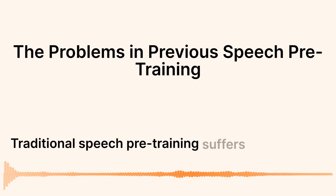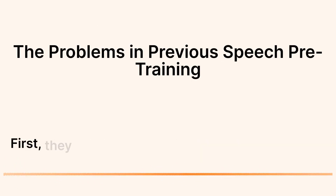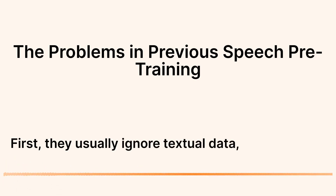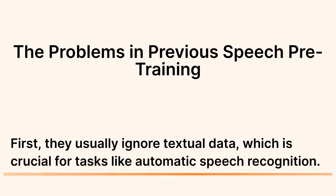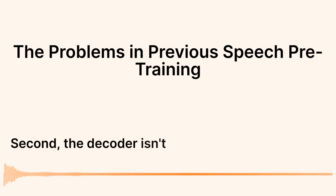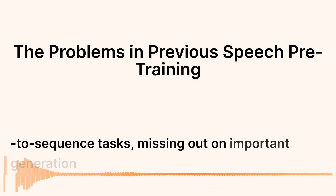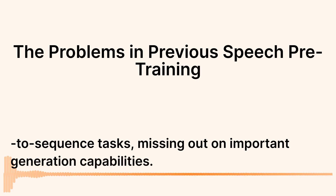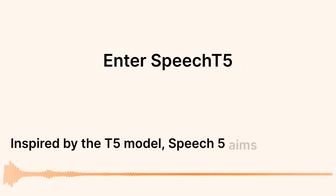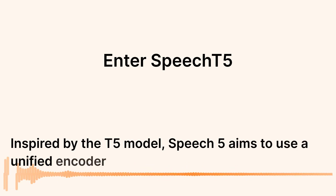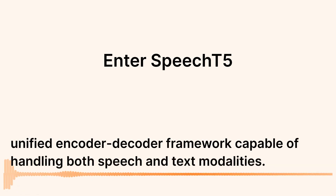Traditional speech pre-training suffers from two main issues. First, they usually ignore textual data, which is crucial for tasks like automatic speech recognition. Second, the decoder isn't pre-trained for sequence-to-sequence tasks, missing out on important generation capabilities. Inspired by the T5 model, SpeechT5 aims to use a unified encoder-decoder framework capable of handling both speech and text modalities.